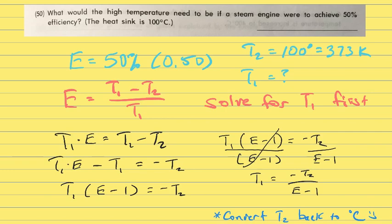So we know that the efficiency, which I just abbreviated E (I know E is supposed to be energy, but we're going to abbreviate it for the sake of not writing it out). Efficiency, if it's 50%, we could write that as a decimal, 0.50. T2, it tells us, is 100 degrees Celsius, so we have to convert that to Kelvin. And we're solving to find what the T1 value would be.